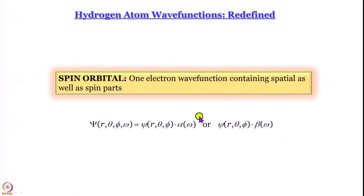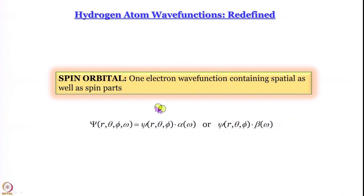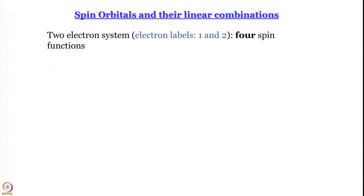If you just take one electron, it can reside in the same orbital in two ways: one in which it has up-spin, and one in which it has down-spin. So two wave functions are now possible when you incorporate spin. This state is called a doublet state — 'doublet' because there are actually two wave functions when you consider the spin part as well.